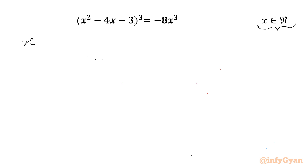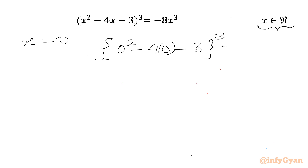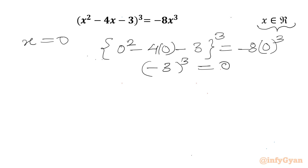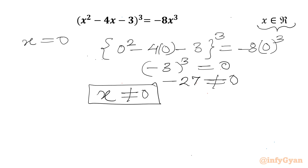I will check our equation at x = 0. We get (0² - 4·0 - 3)³ = -8·0³. So the LHS gives (-3)³ = -27, and the RHS is 0. Since -27 ≠ 0, we conclude x cannot be 0.